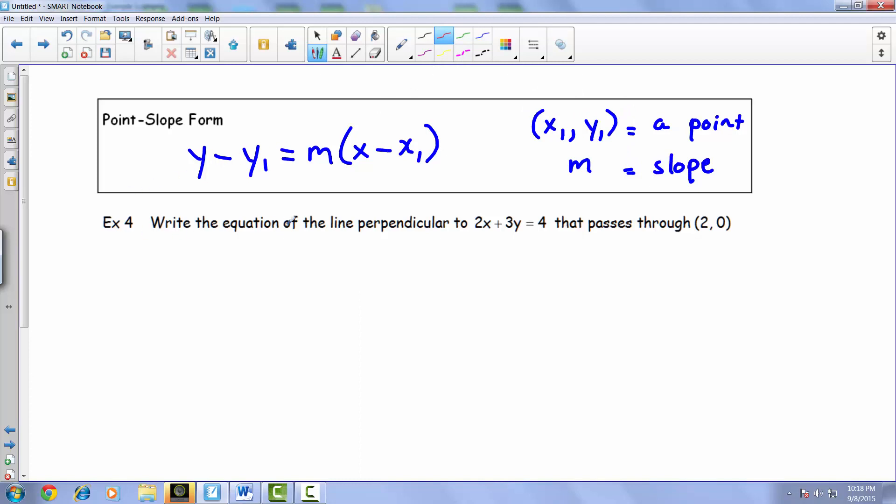That's going to help us with example four, where we're asked to write the equation of a line that's perpendicular to this line and passes through this other point. To write an equation of a line, we need two things: the slope and a point, in this case for point-slope form if that's what we're going to use.